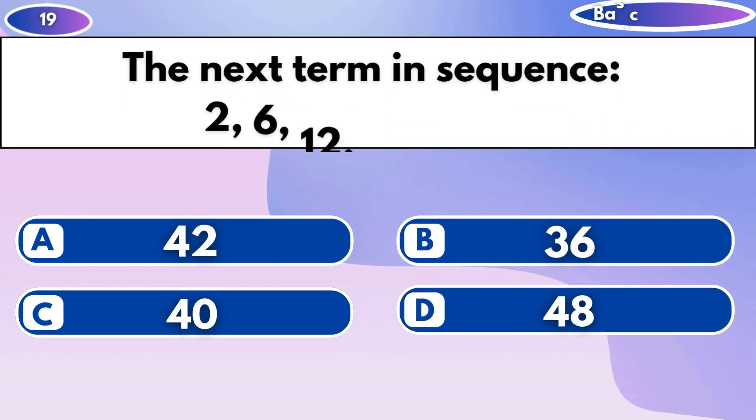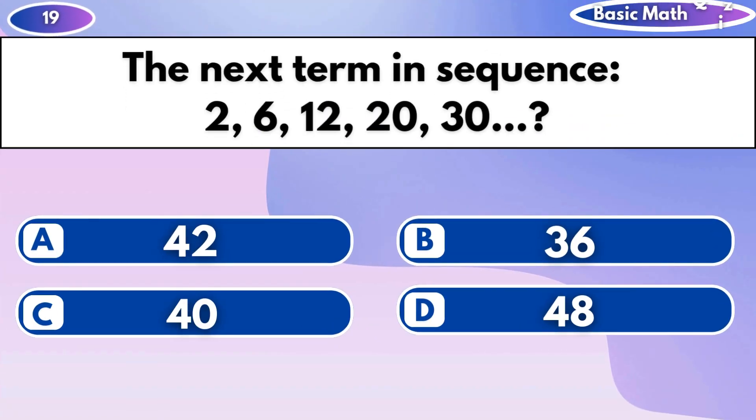What is the next term in the sequence: 2, 6, 12, 20, 30?